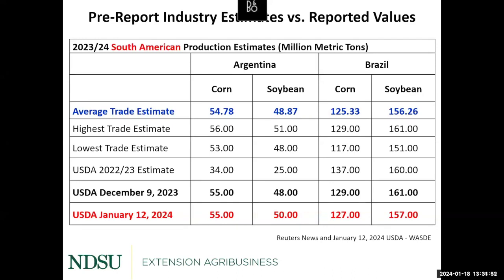The moral of the story is that the Brazilian soybean crop appears to be shrinking and the potential Brazilian corn crop is also getting a bit smaller. Argentina had three consecutive years of drought but is now getting good rainfall and their crop is expected to rebound significantly to more normal or typical production levels — so Argentina should have an average-sized crop this year.